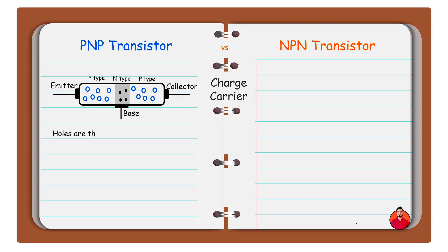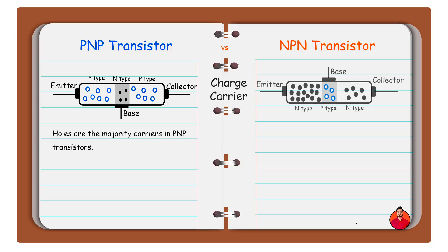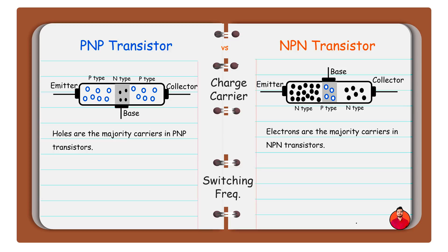Holes are the majority carriers in PNP transistors. Electrons are the majority carriers in NPN transistors. Switching is slower in PNP transistor, whereas switching is faster in NPN transistor.